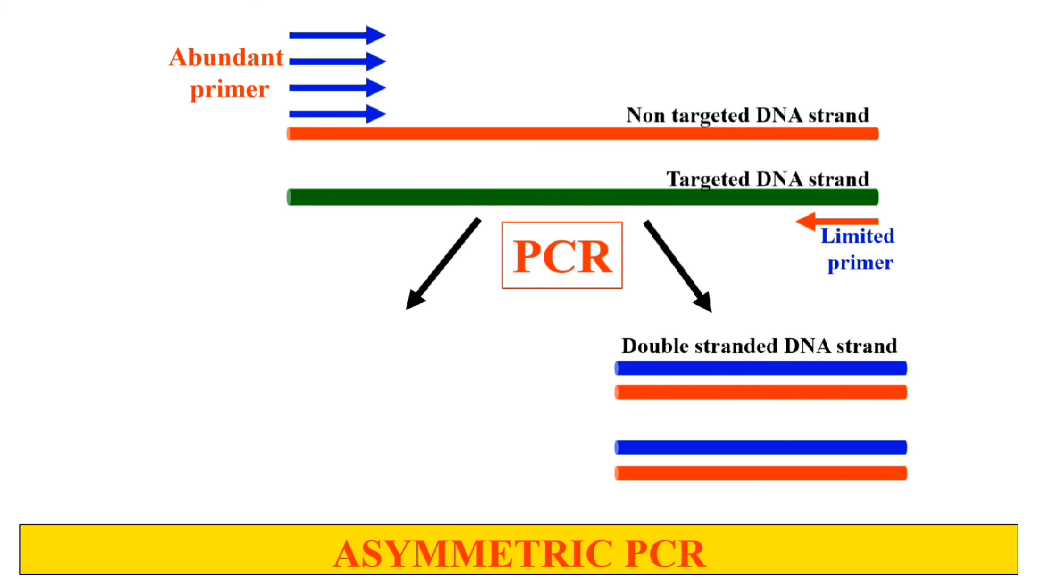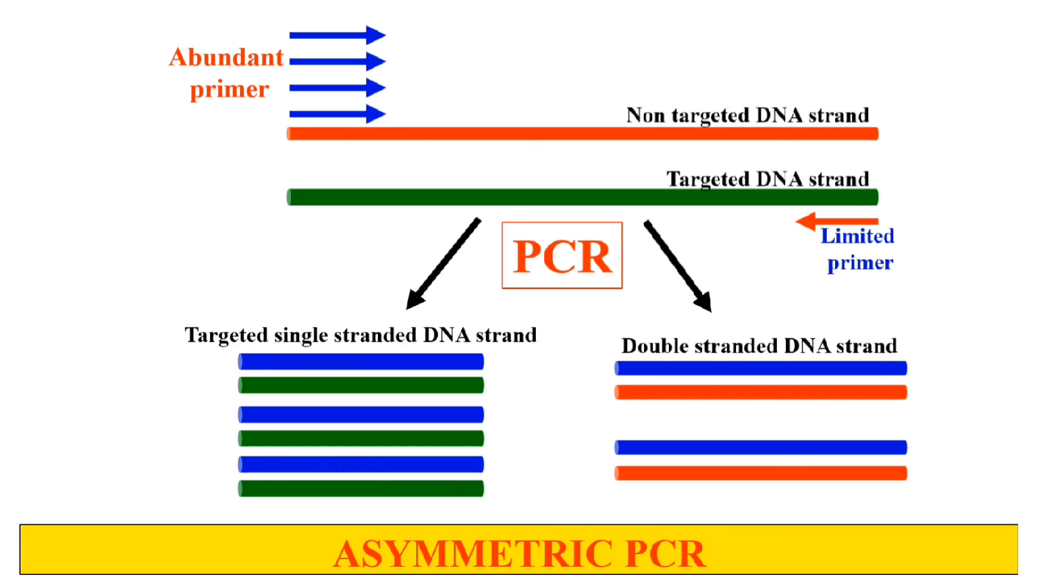We have plenty of primers, so after the exhaustion of primers for the non-targeted strand, PCR will continue for the target strand. We will get more targeted strand amplification compared to non-targeted DNA strand amplification. This is how we perform asymmetric PCR and what the principle behind asymmetric PCR is.